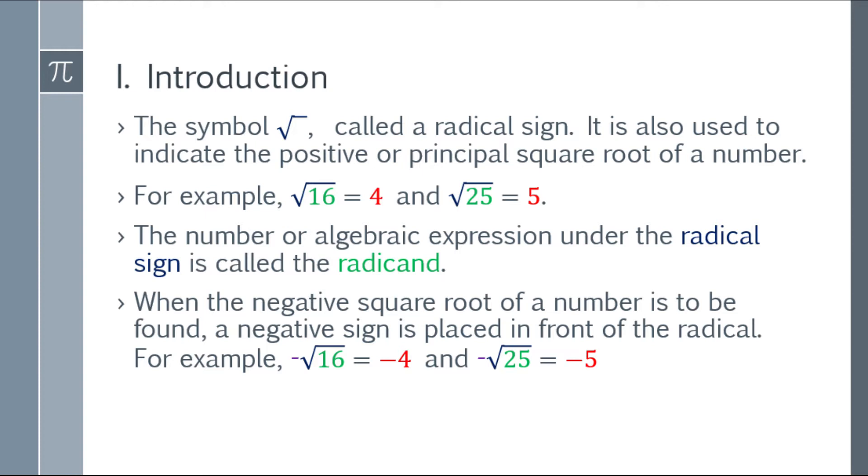For example, the negative tapos square root of 16 is equal to negative 4. At ang negative tapos square root of 25, that will be negative 5.